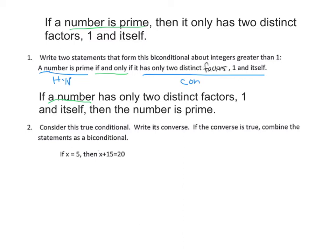To take a biconditional and write it as two conditionals: underline the hypothesis and the conclusion, write an if-then statement using 'if hypothesis then conclusion,' then go backwards — 'if conclusion then hypothesis.'